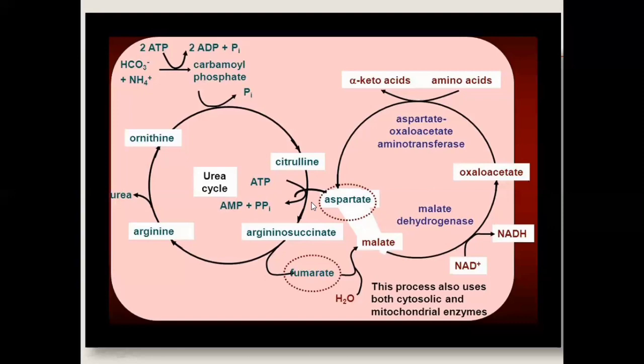When citrulline is converted into arginosuccinate, aspartate provides the amino group here, with the enzyme arginosuccinate synthase acting to form arginosuccinate. Urea has two amino groups — one comes from the catabolism through the deamination reaction and the other comes from aspartate. So aspartate links back to the Krebs cycle through oxaloacetate formation, and aspartate is linked again to the urea cycle.